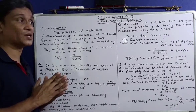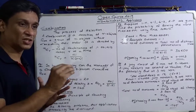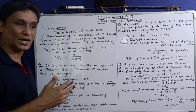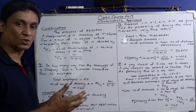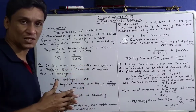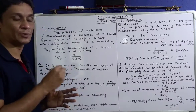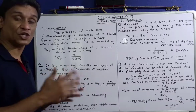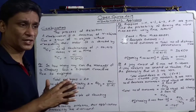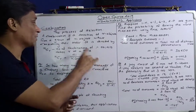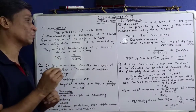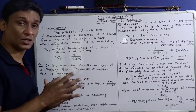What is a combination? It is the process of selection. For example, 10 apples, 3 apples — how many ways can you select? The process of selection: a combination is a selection of r objects from a group of n objects without considering their order.